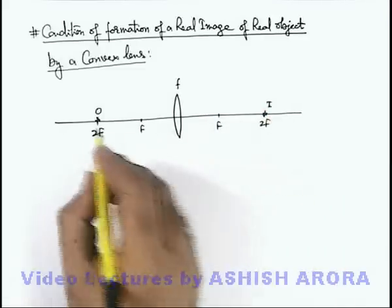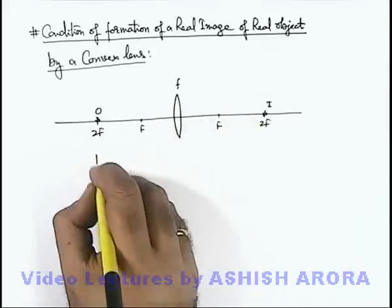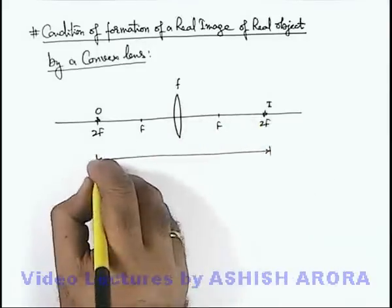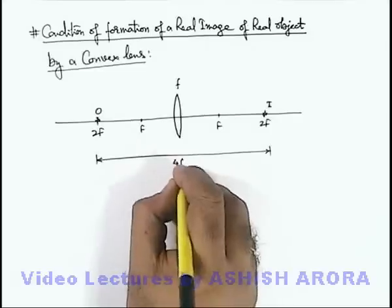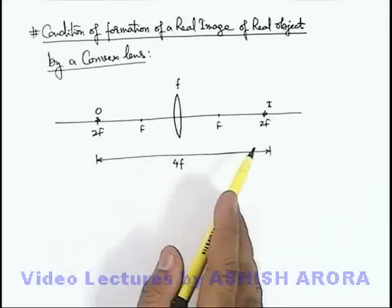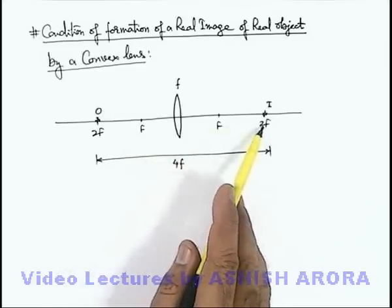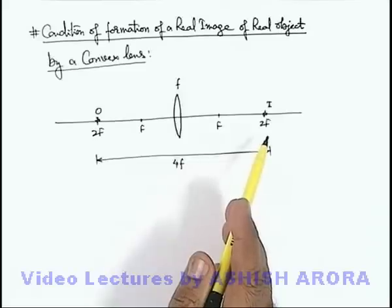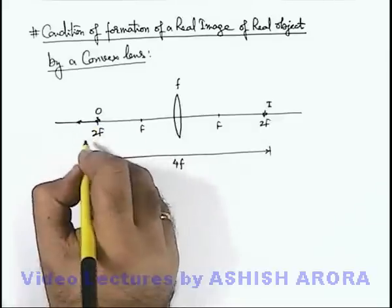In this situation, for the real object, a real image is produced. If we see the separation between object and image, it is equal to 4 times the focal length, as this is the separation between the 2f points on both sides. Now let's displace this object toward the left by a distance x.